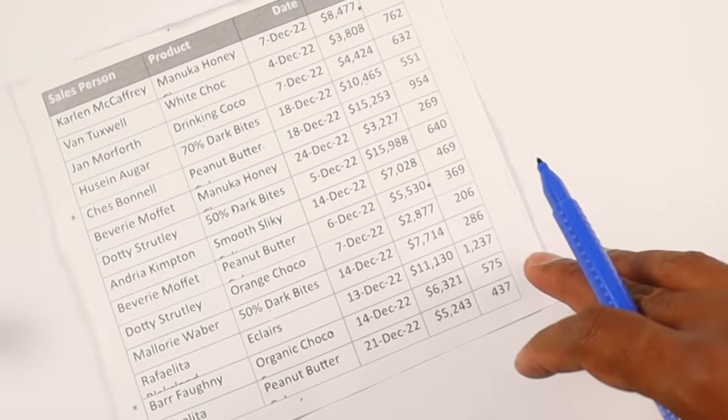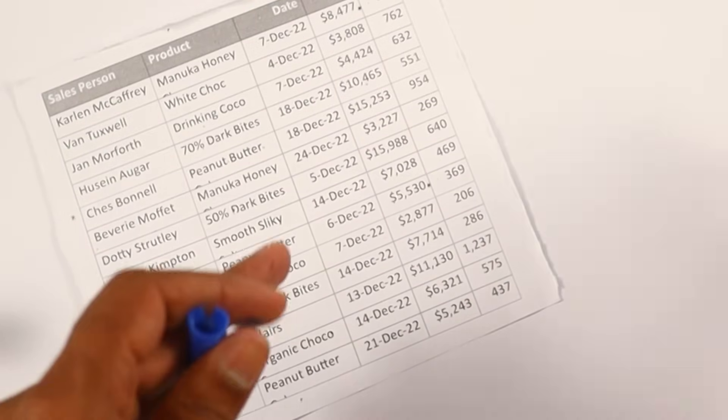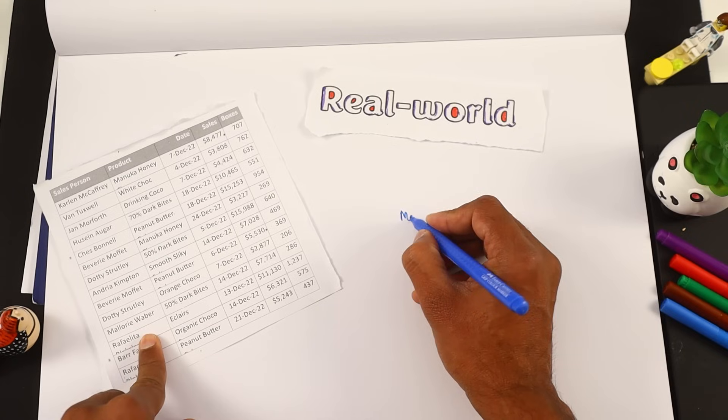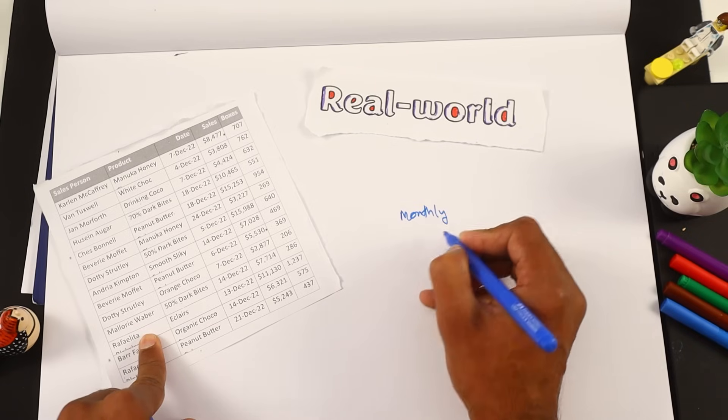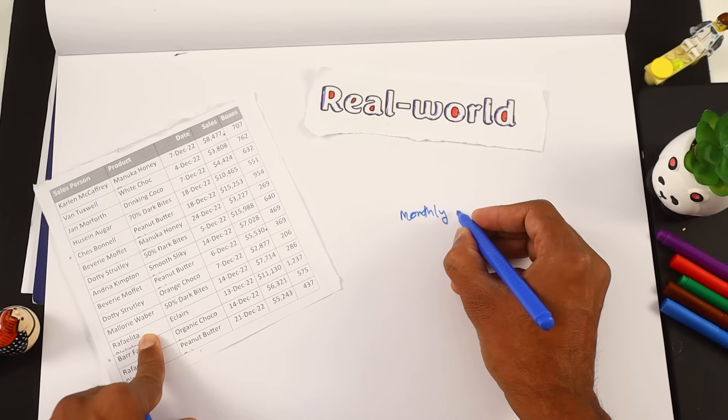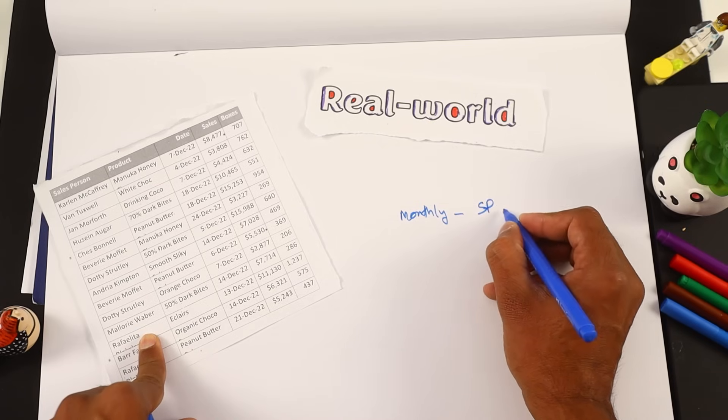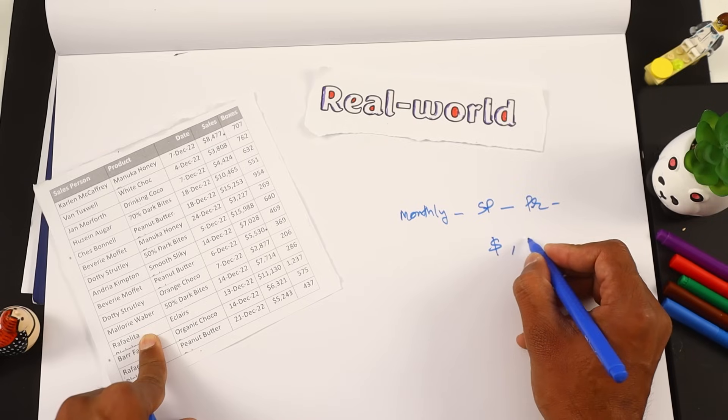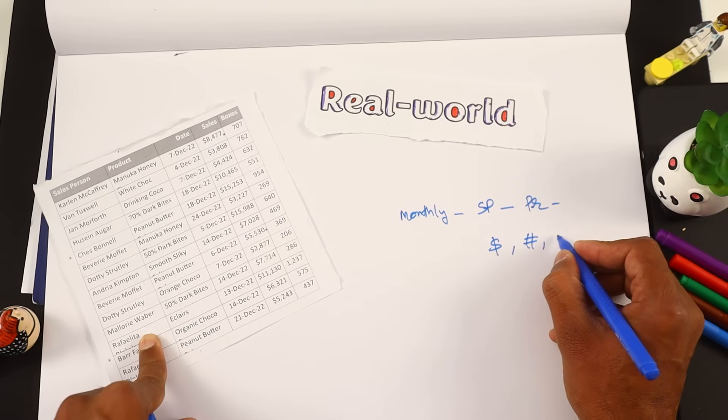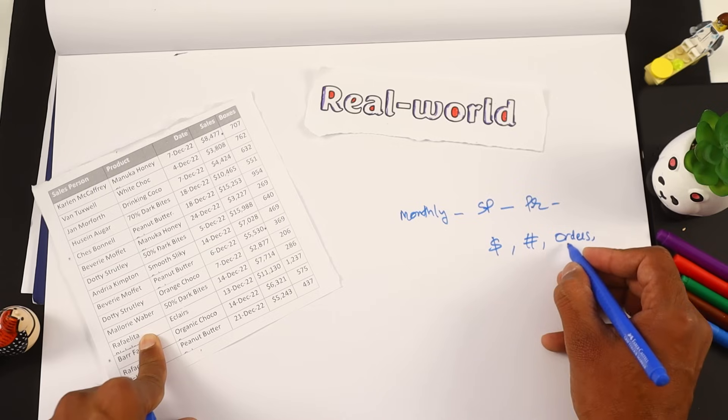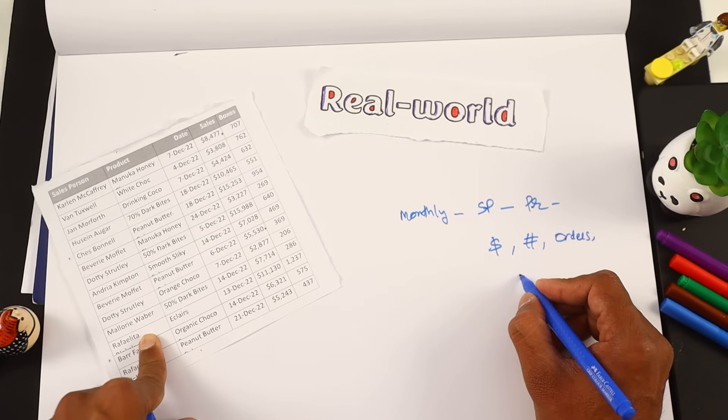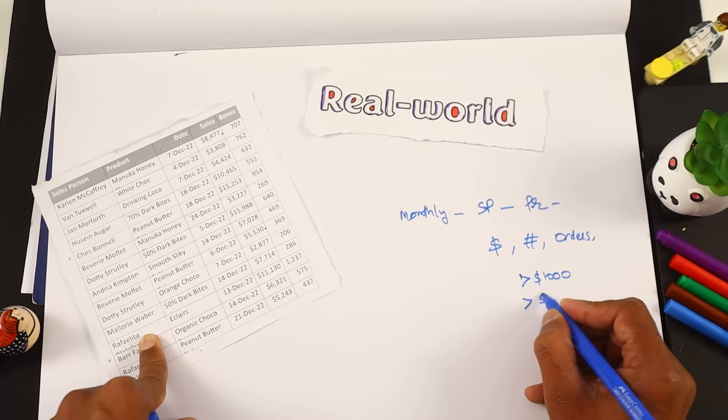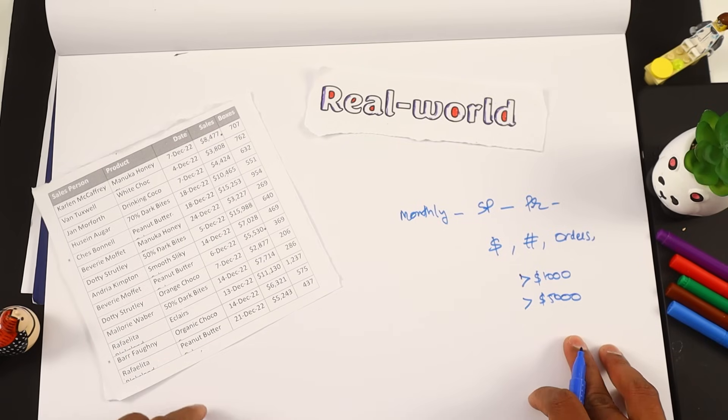For example, from this data, one of the reports that we would like to produce on a periodic basis is a monthly report. Every month what we want to see is for each salesperson for each product, how much is the dollar, how many boxes are sold, and then how many orders are there. Likewise, we would also like to know how many orders had more than $1,000. Likewise, how many orders had more than $5,000. So we want to maintain data like this.